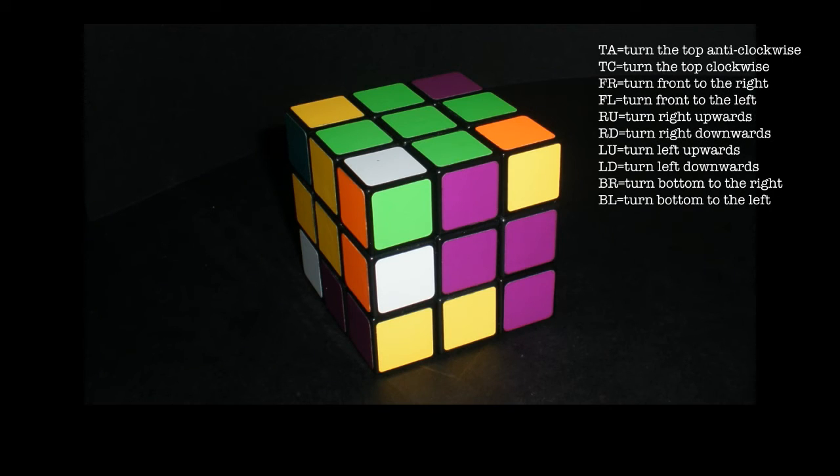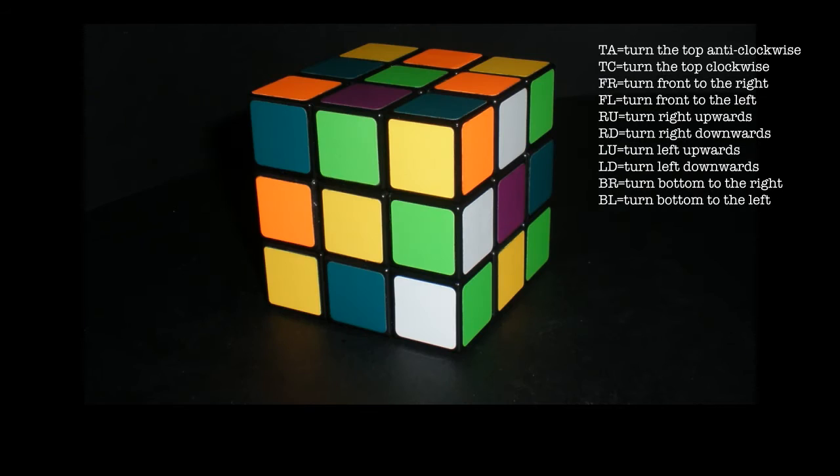To start off we need to solve a cross on one of the sides where the middle colours line up like so. Choose a colour and put this at the top. I'm choosing the green. Then look for middle edge pieces for your colour and get them in the right position like so.